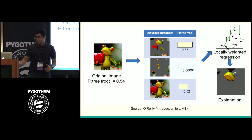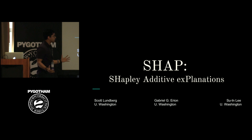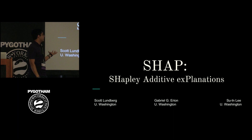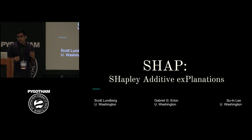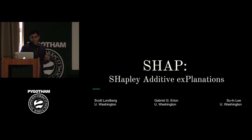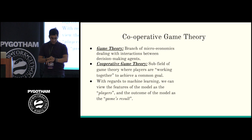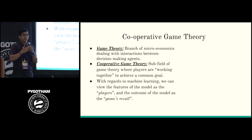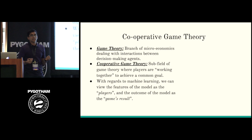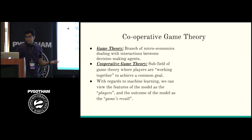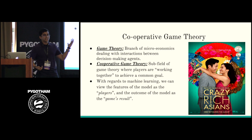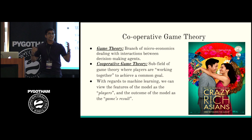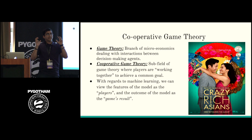That brings us to a cool new thing called SHAP — Shapley Additive Explanations — published at the end of 2017 by Scott Lundberg and others at University of Washington. This is a really cool way of thinking about model explainability. It has some roots in cooperative game theory — a branch of math that deals with the interaction between decision-making agents. You can think about two people competing for resources, the prisoner's dilemma, or nations competing in political conflict.